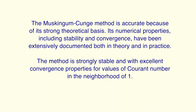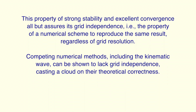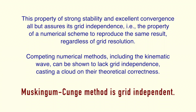The Muskingum-Cunge method is accurate because of its strong theoretical basis. Its numerical properties, including stability and convergence, have been extensively documented both in theory and in practice. The method is strongly stable with excellent convergence properties for values of Courant number in the neighborhood of one. This property of strong stability and excellent convergence all but assures its grid independence — the property of a numerical scheme to reproduce the same result regardless of grid resolution. Competing numerical methods, including the kinematic wave, can be shown to lack grid independence, casting a cloud on their theoretical correctness.